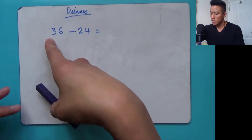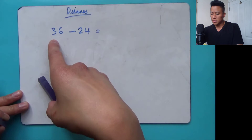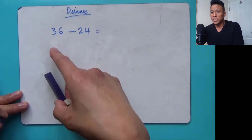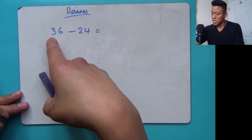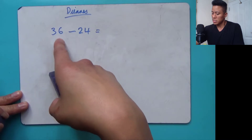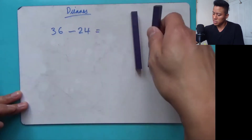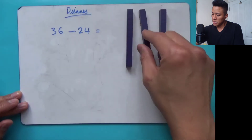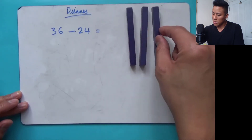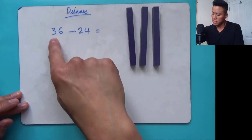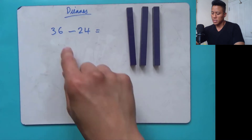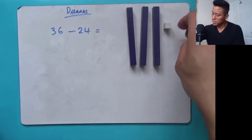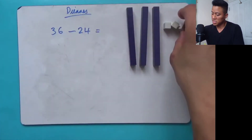We'll start off with the first number, otherwise known as the minuend. So the minuend is 36. We always start with the minuend — the biggest number — so we need three tens and six ones. The six in the ones column represents six ones, which is six.